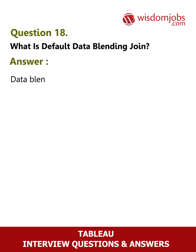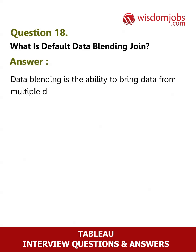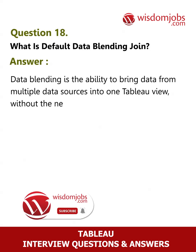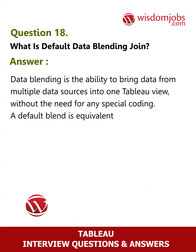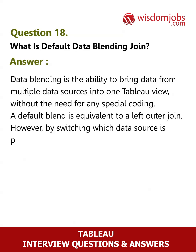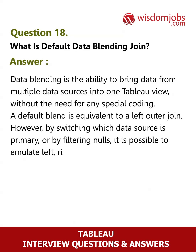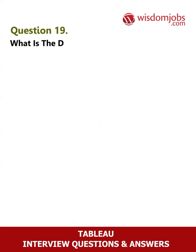Question 18: What is the default data blending join? Data blending is the ability to bring data from multiple data sources into one Tableau view without the need for any special coding. A default blend is equivalent to a left outer join. However, by switching which data source is primary, or by filtering nulls, it is possible to emulate left, right, and inner joins.